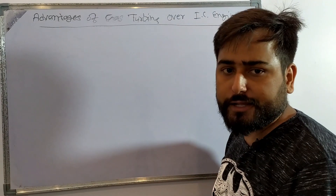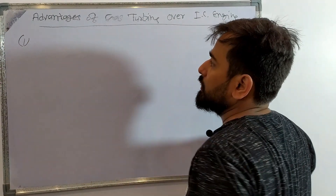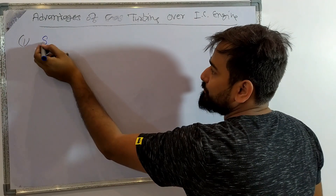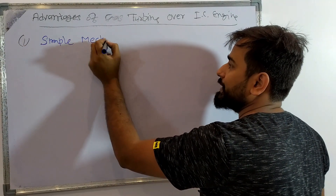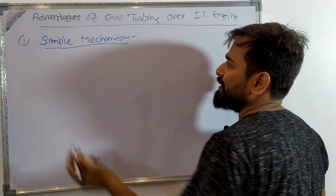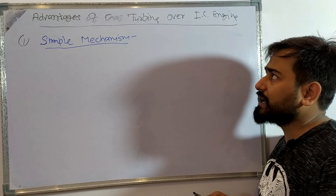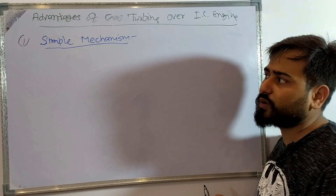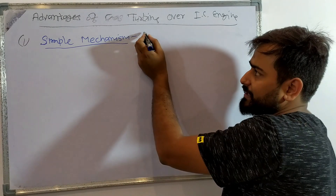The first advantage is the simple mechanism. The mechanism of Gas Turbine is simpler than IC Engine. The components are different but you can install it more easily. But in IC Engine, we have to use many additional things, so the product is tougher and the engine is more difficult to maintain.